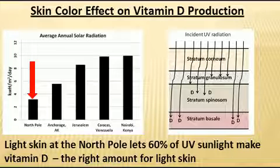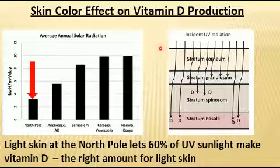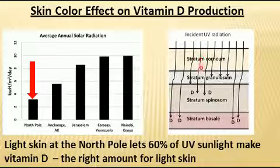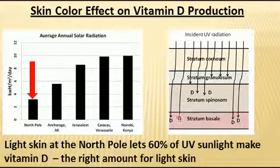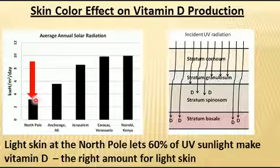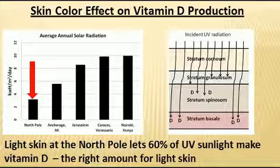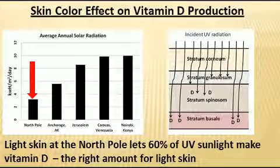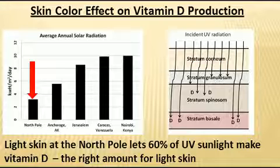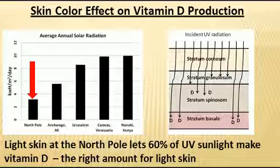For a light-skinned person, the upper skin layers impede incident sunlight very little. In this case, about 60% of sunlight rays get through to the layers that generate vitamin D. If that person lives near the North Pole — with only about one-quarter of the sunlight available at Nairobi, Kenya — the numbers work out to about three times as much vitamin D generated as for a person living at Nairobi. All the various locations on Earth fall between those two extremes, with the various races living at given latitudes receiving just the right amount of sunlight for their skin color.